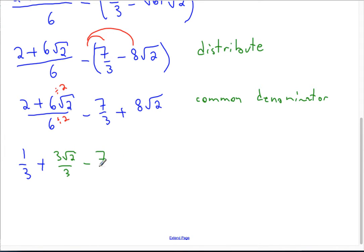Subtract 7 over 3. And then here, I need to multiply the top and bottom by 3 to get a common denominator. So plus 24 root 2 divided by 3.